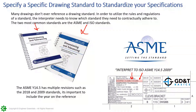Another ASME standard worth knowing is ASME Y14.45, which covers inspection reporting methods for geometric tolerancing — a good one for inspection plans. Any questions? If you have the ability to unmute yourself, feel free to chime in with your mic or drop it in chat. This is an informal conversation, so don't hesitate to jump in.